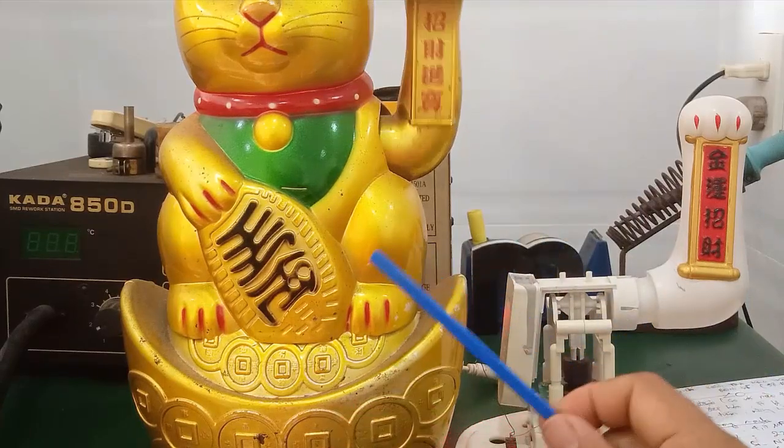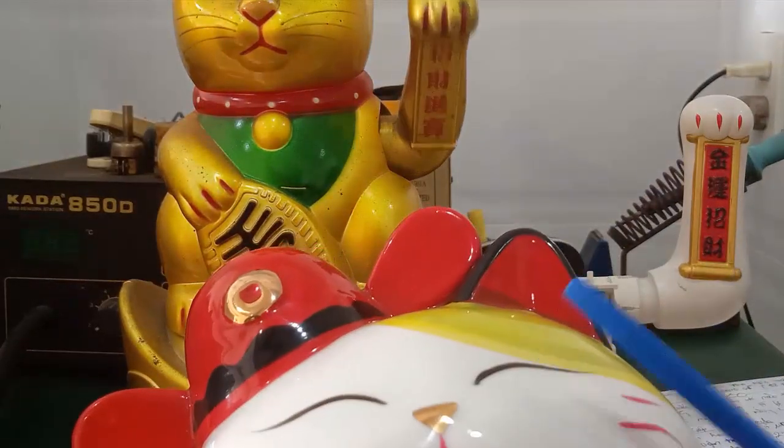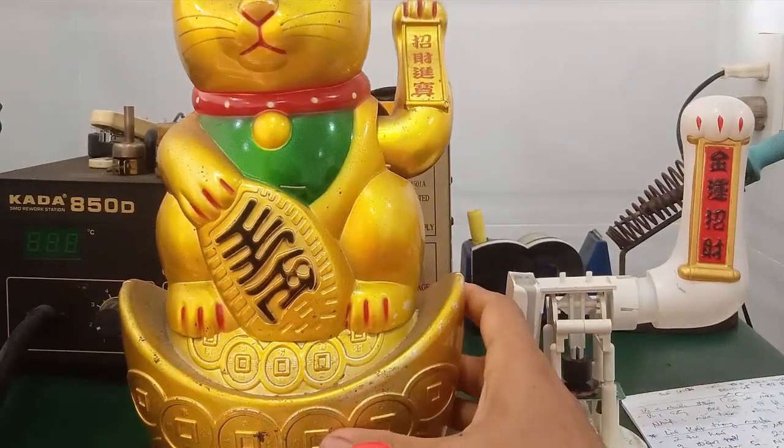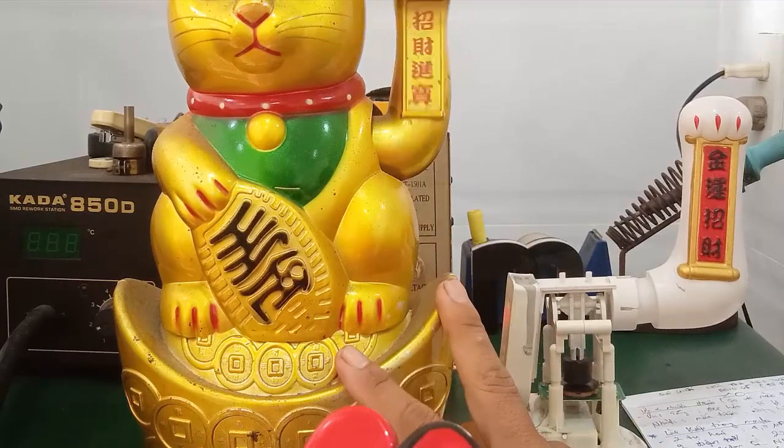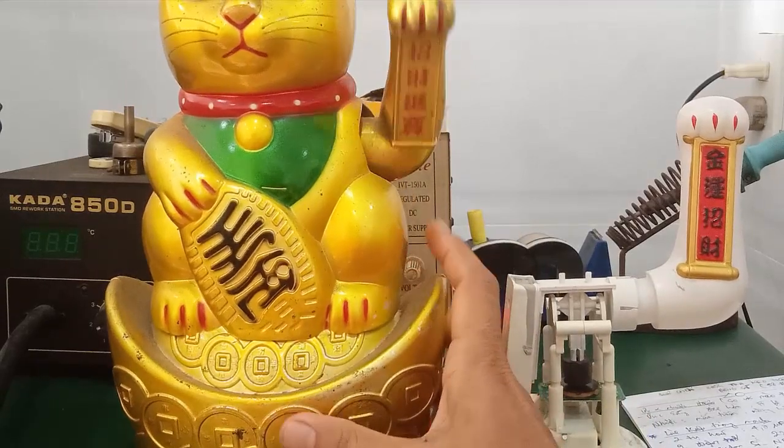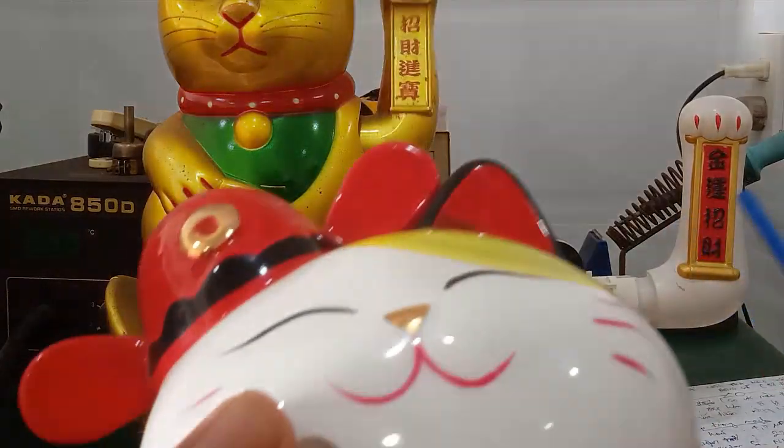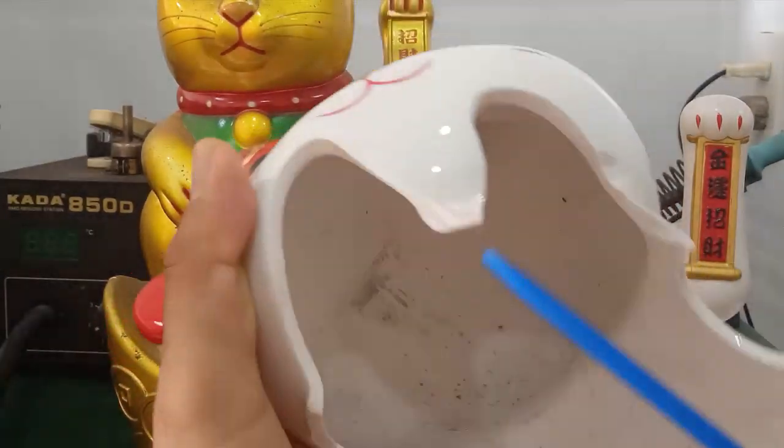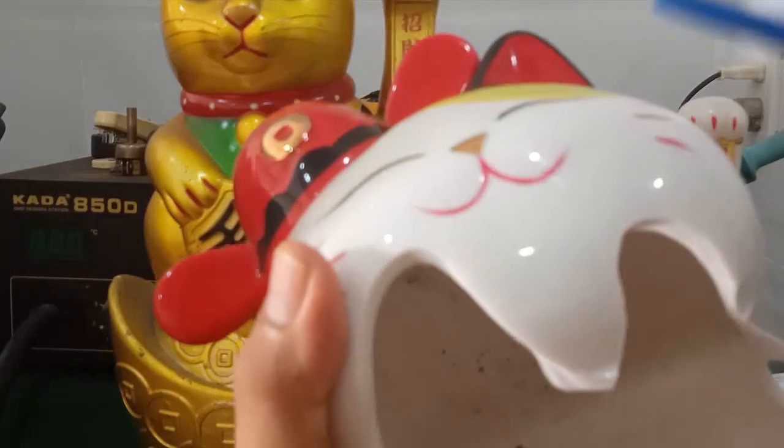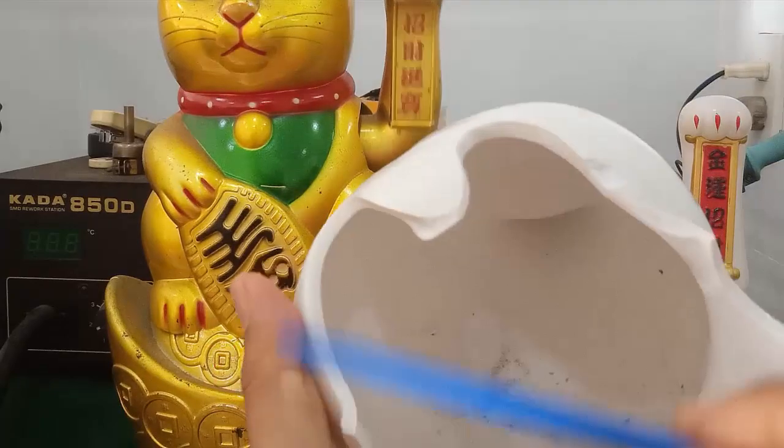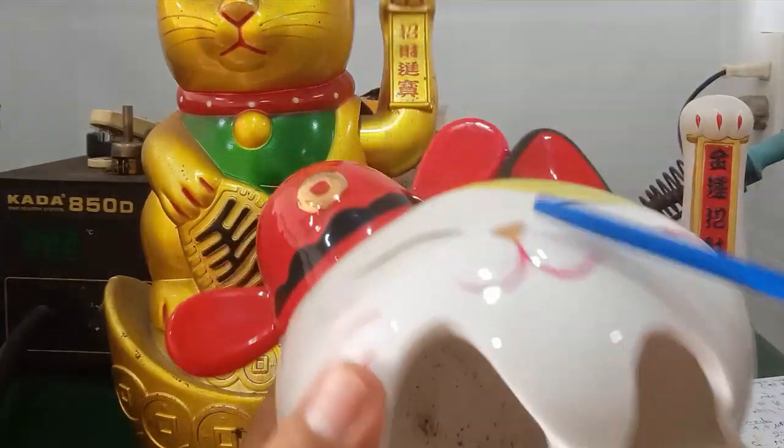Cái đó là ưu điểm của nó, còn cái nhược điểm của nó là cái trọng lượng con mèo này, nó nặng rất nặng so với cái mèo bằng nhựa này. Đồng thời khi mà rớt, cái con mèo bằng nhựa này có thể sửa chữa lại được, nó không bị nứt vỡ. Còn đối với những con mèo bằng sứ này, rớt một cái là nó vỡ liền.